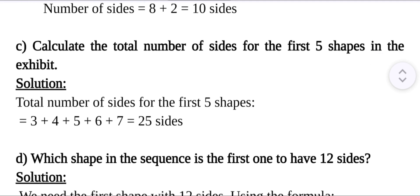Now, question number C: Calculate the total number of sides for the first 5 shapes in the exhibit. Total number of sides for the first 5 shapes: first shape has 3 sides, second shape has 4 sides, third shape has 5 sides, fourth shape has 6 sides, and fifth shape has 7 sides. Then the total is 25 sides.